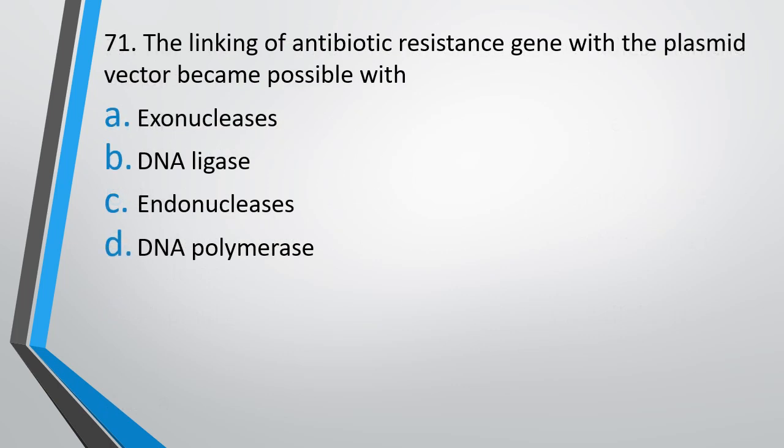Question number 71. The linking of antibiotic resistance genes with the plasmid vector became possible with: Option A: Exonucleases. Option B: DNA ligases. Option C: Endonucleases. Option D: DNA polymerases. The correct answer is Option B — with the discovery of DNA ligase, the linking of antibiotic resistance genes with plasmid vectors became possible.